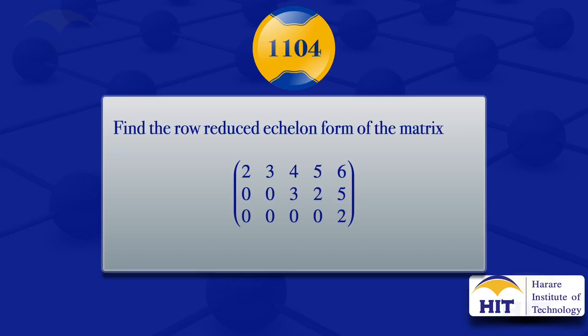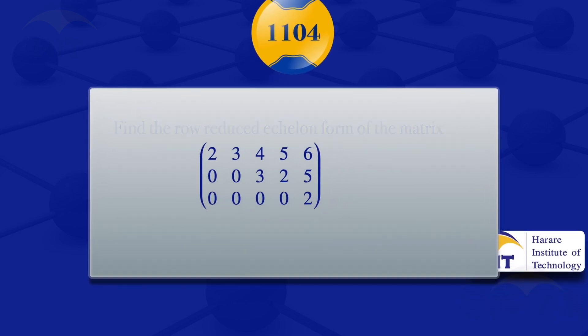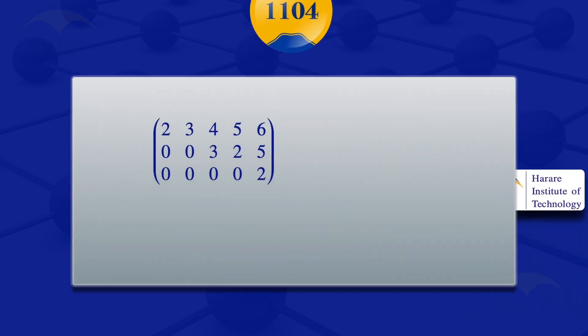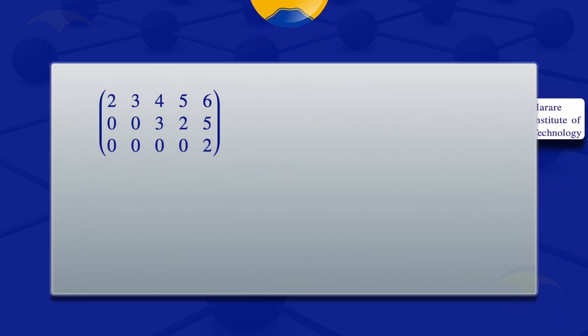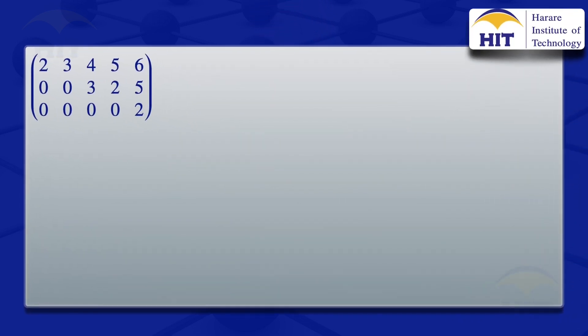In this tutorial, I'm going to find the row reduced echelon form of the matrix which has rows 2, 3, 4, 5, 6; the second row 0, 0, 3, 2, 5; and the third row 0, 0, 0, 0, 2. So we are given that matrix and want to find the row reduced echelon form.